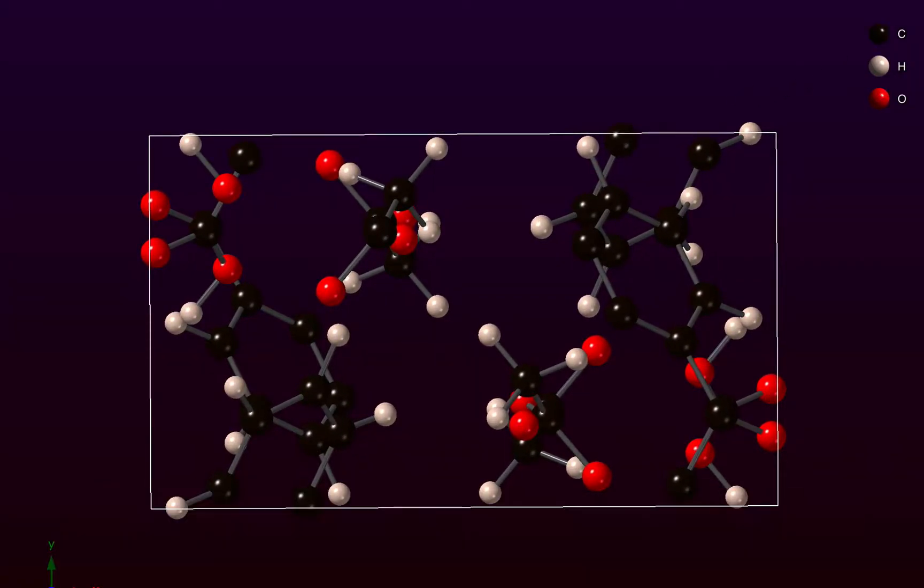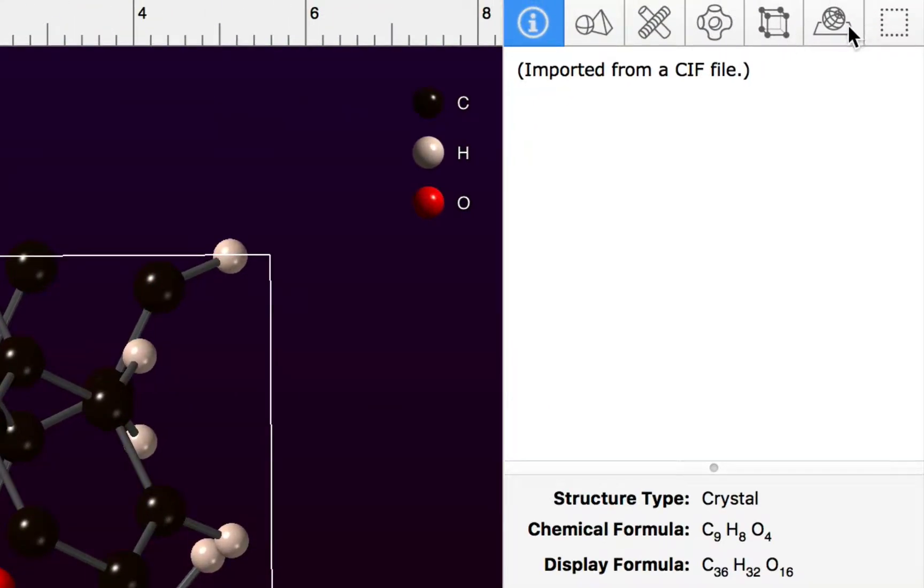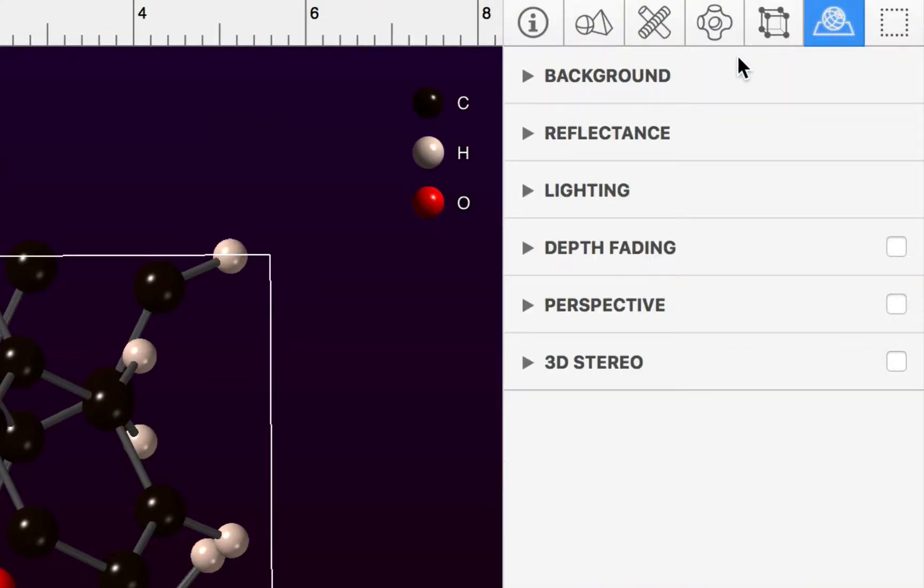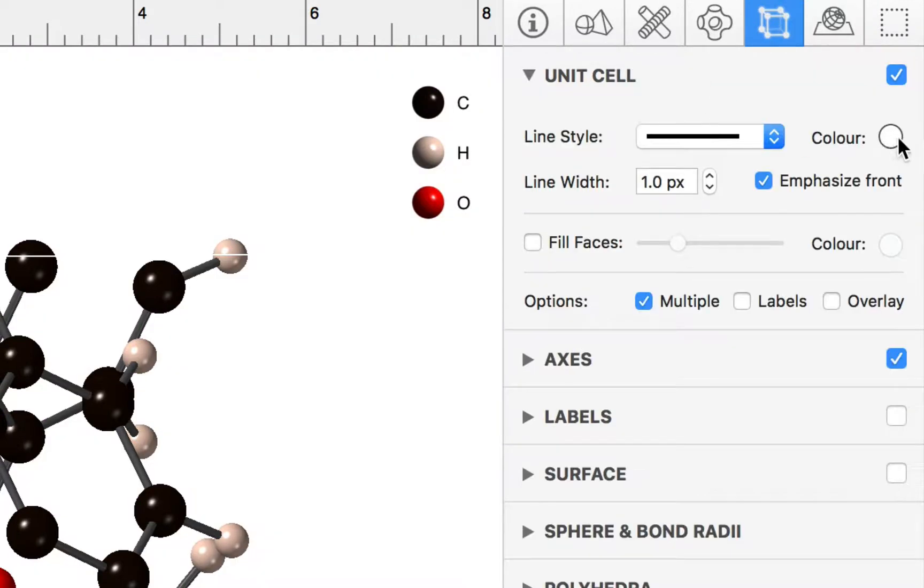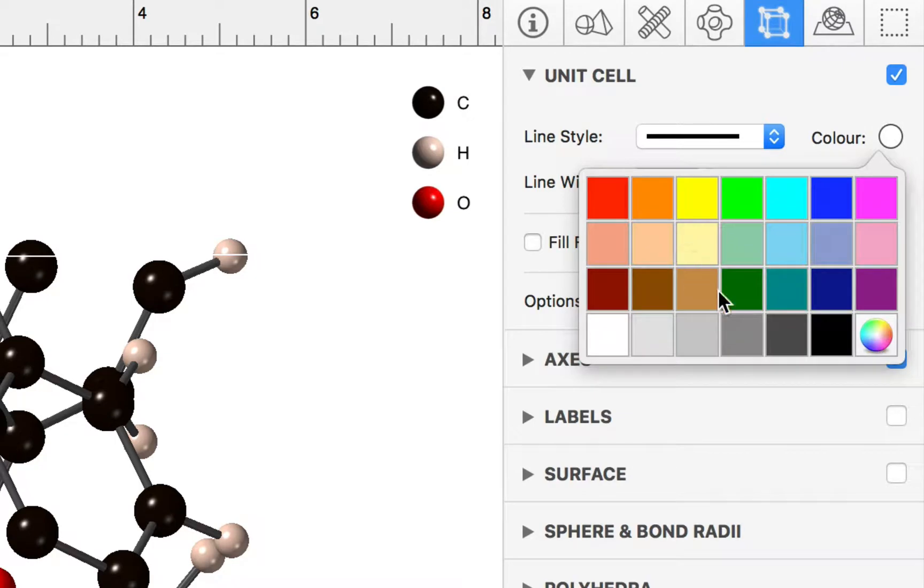The first thing I'm going to do is change the background color using our rendering inspector. Let's choose a white background color and change the color of the unit cell frame using the model inspector.